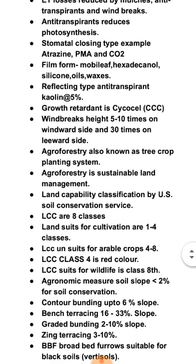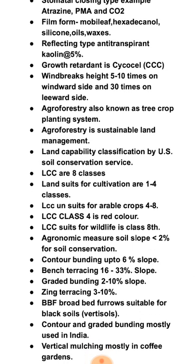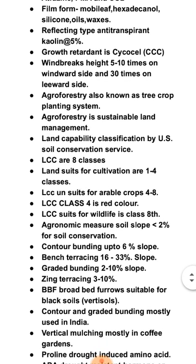Land capability classification by the US Soil Conservation Service has 8 classes. Classes 1 to 4 are suitable for arable cultivation, and classes 4 to 8 are unsuitable for arable crop production. Class 4 is represented by red color — important for ICAR NET. Class 8 is suitable for recreation and wildlife.